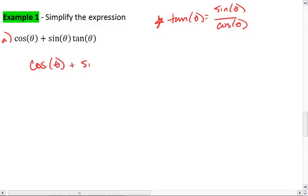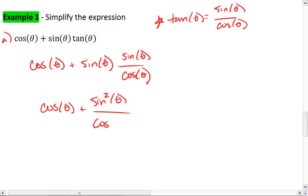We can plug that in for tangent. We get cosine theta plus sine theta times sine theta over cosine theta. We can now multiply the sine theta through, giving us cosine theta plus sine squared theta all over cosine theta.